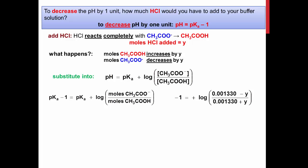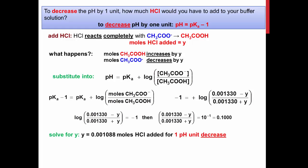This leaves you with negative 1 being equal to the log of the moles of acetate minus Y divided by the moles of acetic acid plus Y. Solving the expression for Y gives you the moles of hydrochloric acid that will cause a decrease in pH by 1 if added to the buffer.